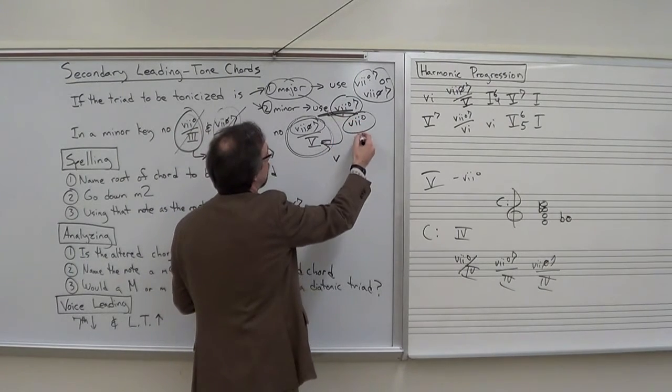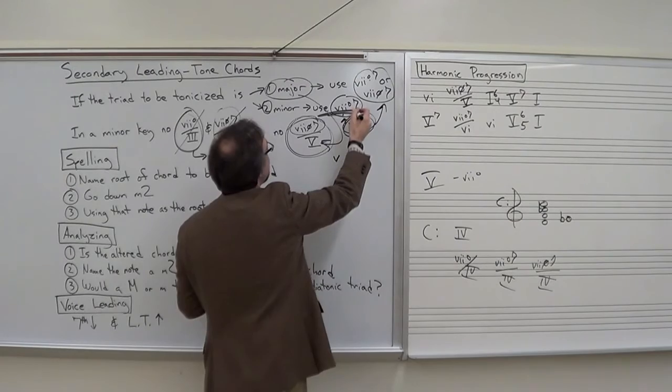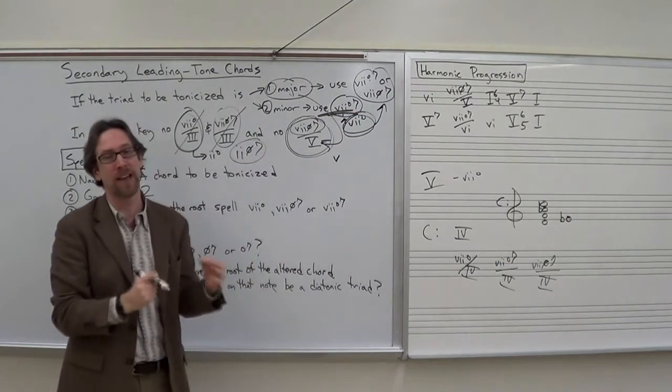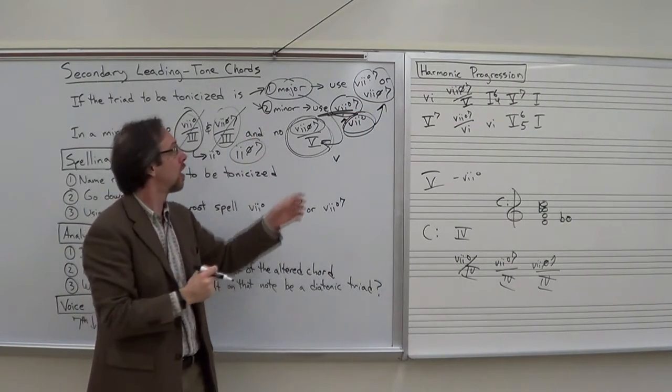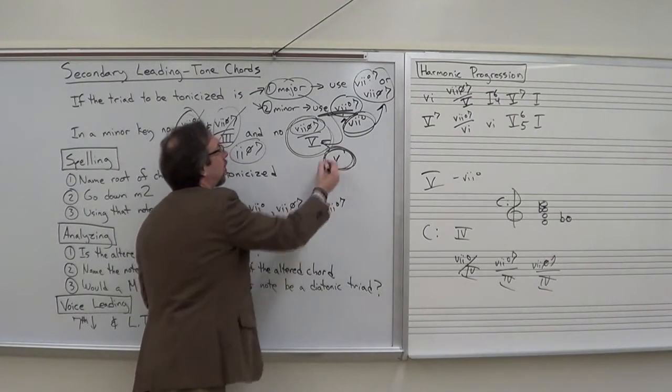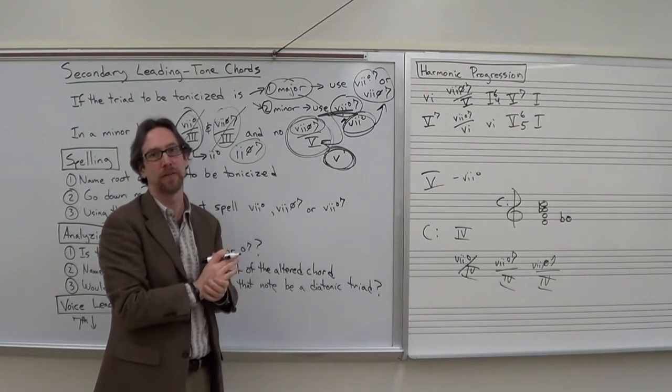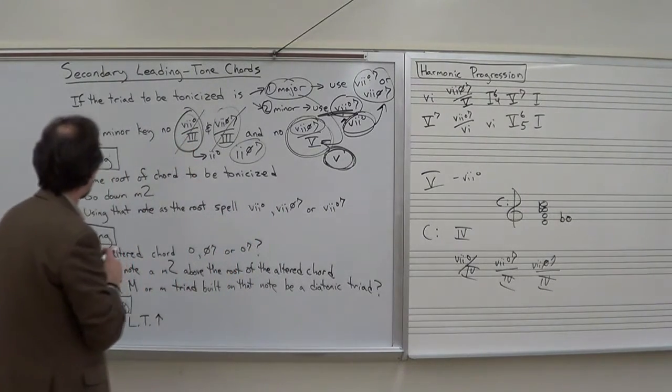Because that's what's natural to a minor key, you would not use a half diminished 7 sonority to be the secondary function of that 5. You would have to use either the triad, which is available for both major and minor, or if you wanted to use a 7th chord, a leading tone 7th chord, it would have to be fully diminished 7, because naturally in the minor key you have a naturally occurring minor 5 chord.